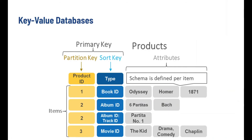First of all, we have the key-value databases. Key-value databases use a simple key-value method to store data as a collection of key-value pairs, where the key serves as the unique identifier. Both the keys and values can be anything, from simple data types like numbers (also called integers) and words (also called strings), to complex data types like lists and hash maps. Key-value databases are also very good at horizontal scaling, which other databases cannot achieve.